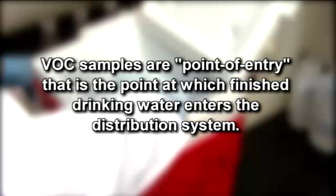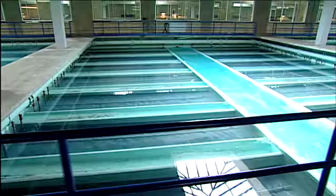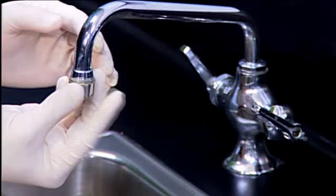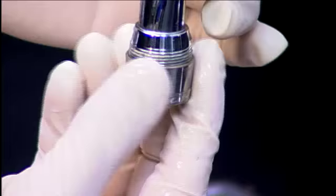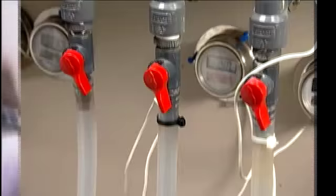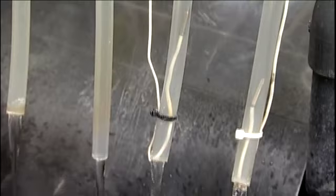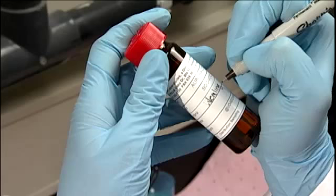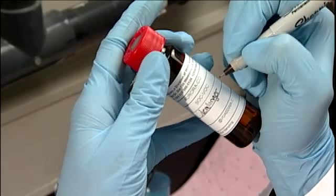VOC samples are taken at the point of entry — that is, the point at which finished drinking water enters the distribution system. Some plants have permanent sample taps for this purpose; if yours does not, select the sample location carefully. Generally for all sample tap use, except lead, remove any aerator before sample collection. Begin by adequately flushing the sample tap to ensure the sample is representative of the source. This may take from three to five minutes.